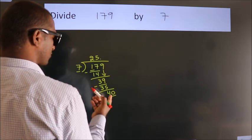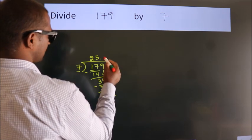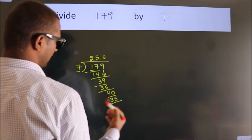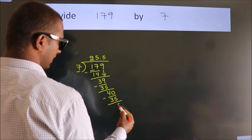A number close to 40 in the 7 table is 7 fives, 35. Now we subtract. We get 5.